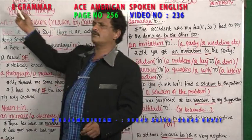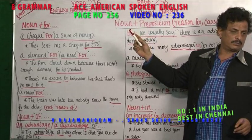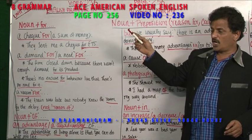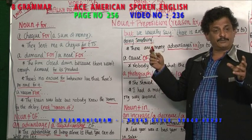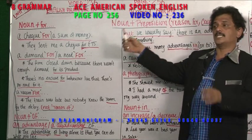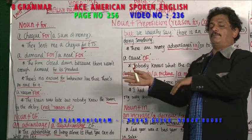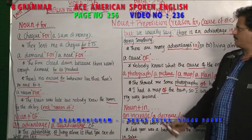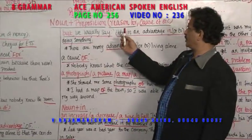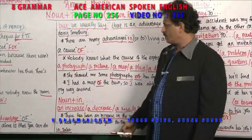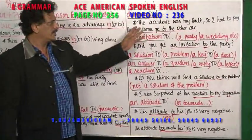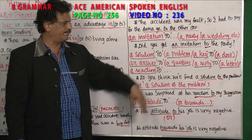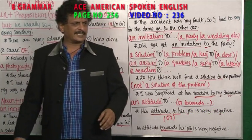So, noun plus preposition: earlier you have seen preposition with noun — by train, in car, on bicycle. After preposition you saw the noun. Now what you are seeing is after noun you are using the preposition, and only then it will give meaning. Noun plus for: check for. Noun plus of: advantage of, disadvantage of. Noun plus to: solution to, answer to, reply to. Hope you are able to understand — are you clear?